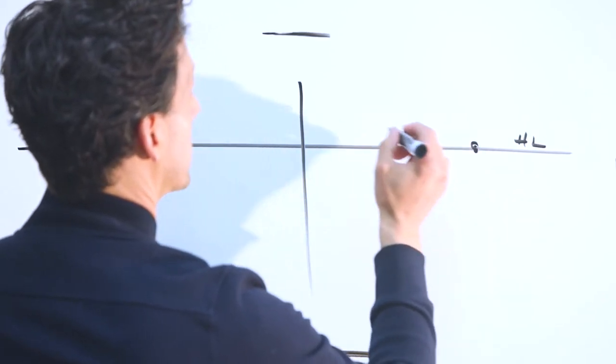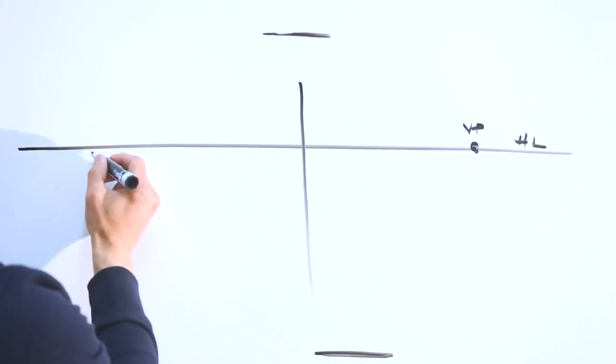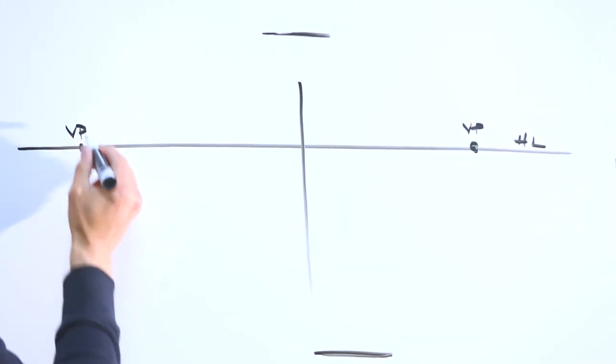Our vanishing point, because it is two-point perspective, there will be one over here and there will be one over here.